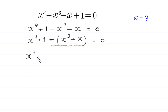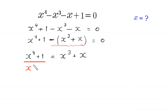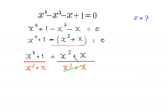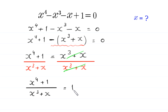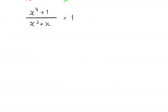We move the whole expression to the right-hand side, so the equation becomes x to the power 4 plus 1 is equal to x cubed plus x. Now we divide both sides of this equation by x cubed plus x, so x cubed plus x cancels out, and the equation becomes x to the power 4 plus 1 divided by x cubed plus x is equal to 1.